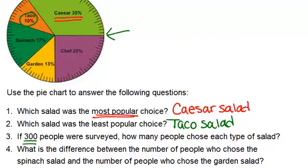okay, well, what's 35 percent of 300 people? What's 25 percent of 300 people? And so on. So to figure that out, you just are multiplying percentages.